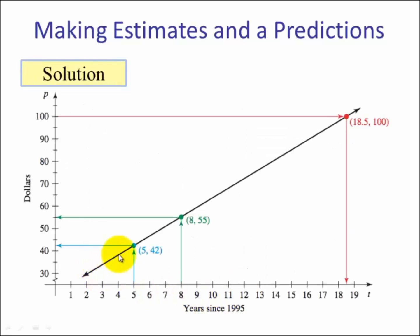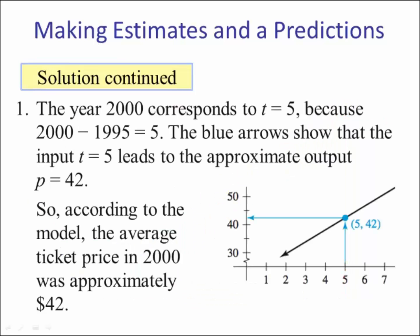Here's our line. So for number one, the year 2000 corresponds when t equals 5 because 2000 minus the number of years since 1995 is 5. So if we look at the blue arrow, when t is 5, we have our predicted y being 42. So how we would interpret it: according to the model, the average ticket price in 2000 was approximately $42.